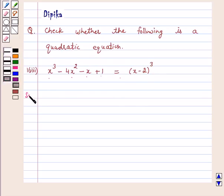Let's start the solution. Our given equation is x cubed minus 4x squared minus x plus 1 equals x minus 2 cube.